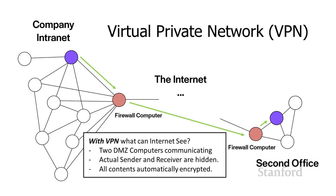As far as what people on the internet are able to see, they'll see that the two DMZ computers are communicating — they'll know the Tokyo office and the Palo Alto office are communicating, but they won't know which specific computers are communicating, they won't be able to identify what type of communication is taking place, and they won't be able to see the contents at all. This can also be done with individual computers — if you're operating from home or from a hotel, your computer would bundle everything up, encrypt it, and send it to the DMZ computer in the office to be decrypted there.